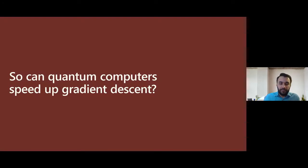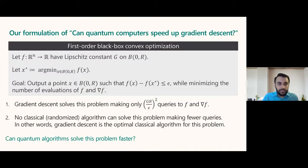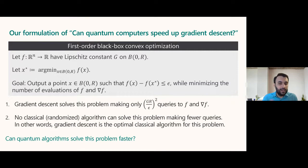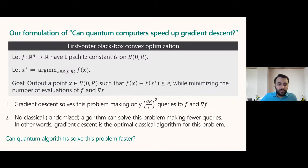We found the problem that gradient descent solves optimally. Gradient descent solves it using (G*R/epsilon)^2 queries, and no classical algorithm can do better. This problem fits the bill and is a very basic problem in convex optimization — you'll find it in any textbook. So this is the natural question to consider when asking: can quantum computers speed up gradient descent? Can quantum computers solve this problem faster?